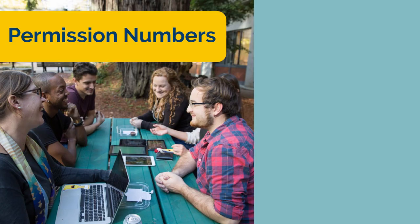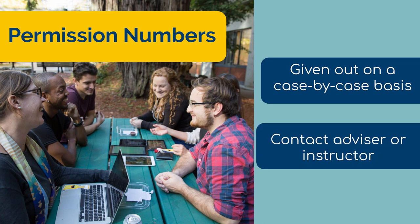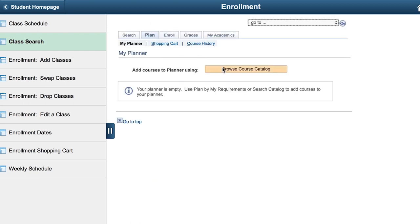Permission numbers are given out by advisors or instructors in special cases. If you feel this might be an option for you, please contact your major advisor or the course instructor. Permission numbers will add you to the class without having to worry about it being closed or waitlisted. If you receive a permission code, you are now able to enroll in your desired course.